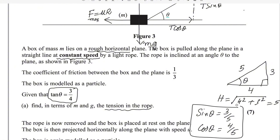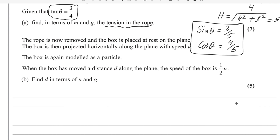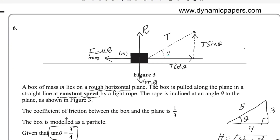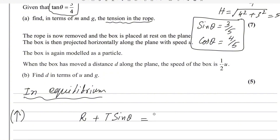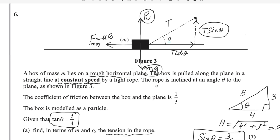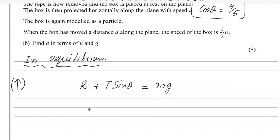As the system is in equilibrium because it is moving at constant speed with no acceleration, we can apply the equilibrium conditions. For vertical equilibrium, upward forces equal downward forces. The two upward forces are R and T sin theta, and the one downward force is mg. So: R + T sin theta = mg, which gives R = mg − T sin theta. We will use this value of R in the next equation.